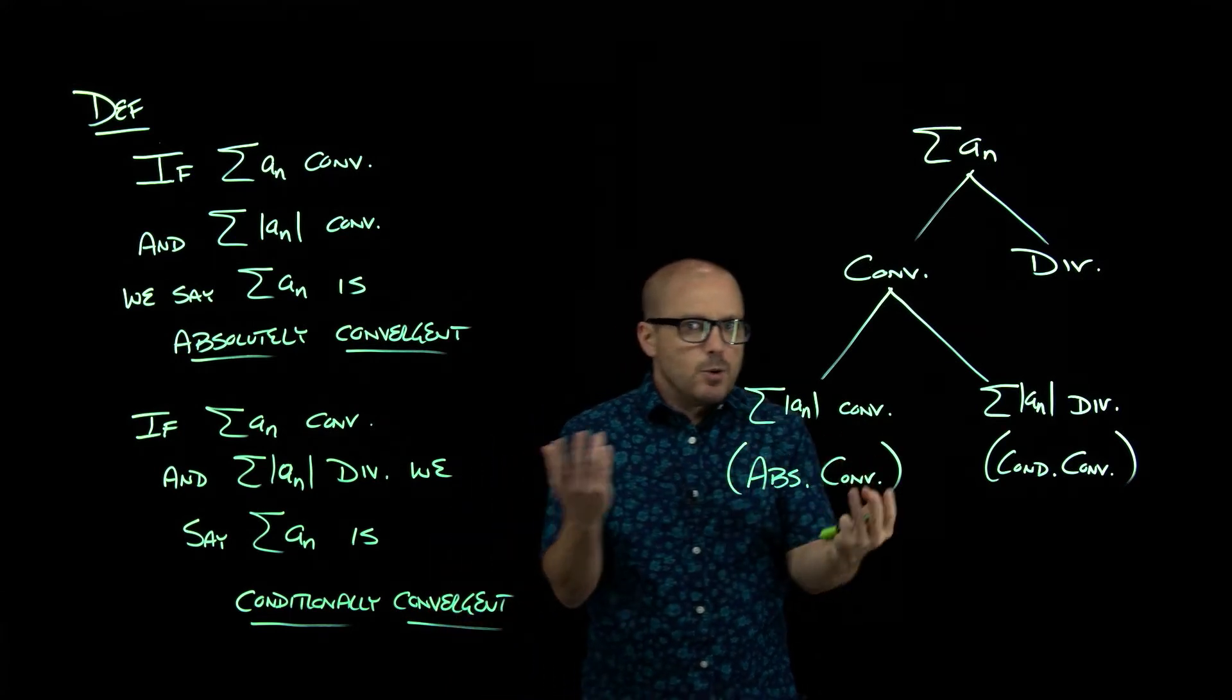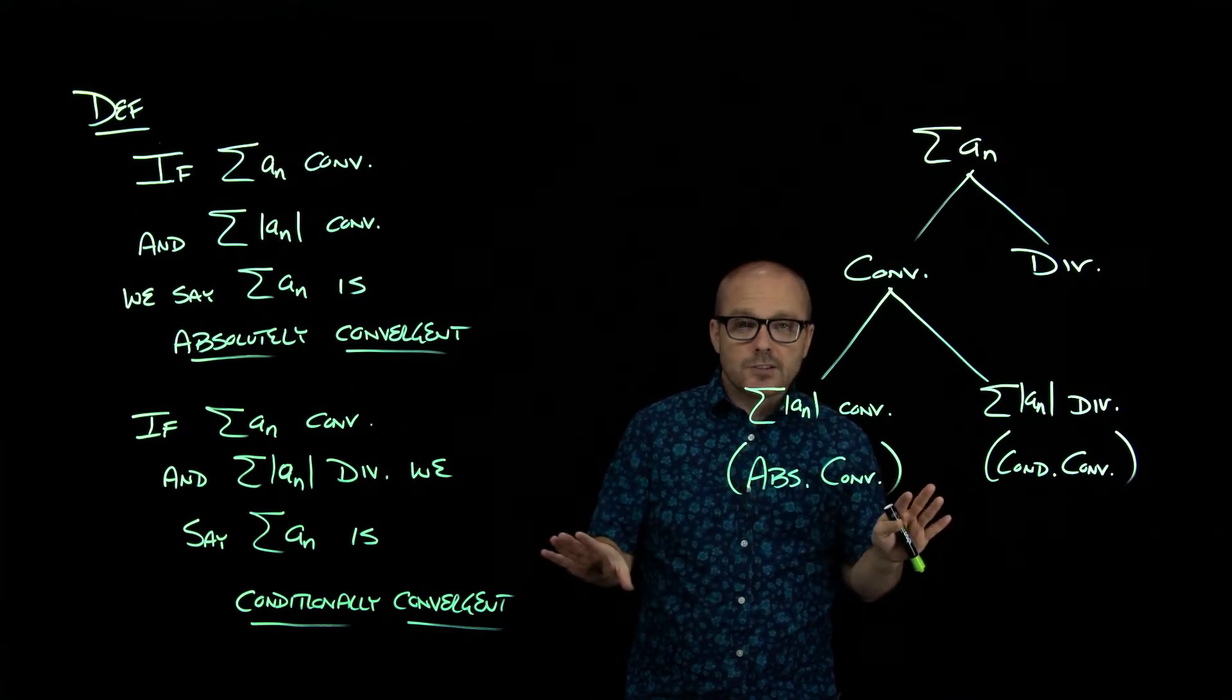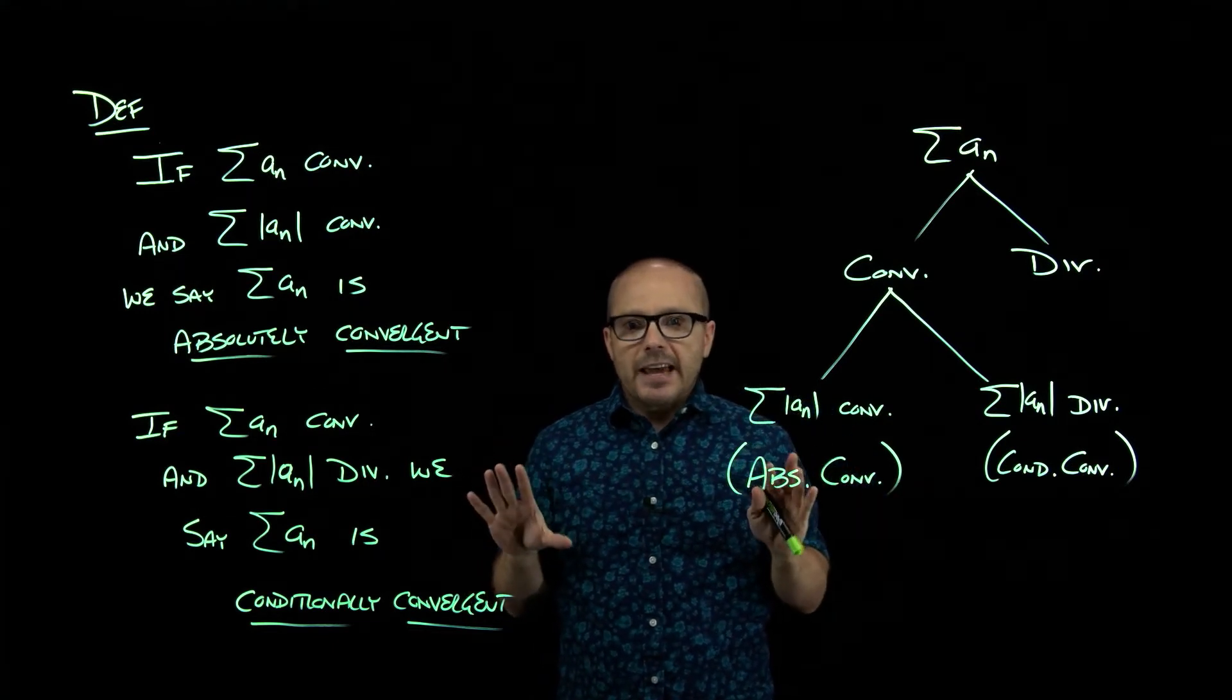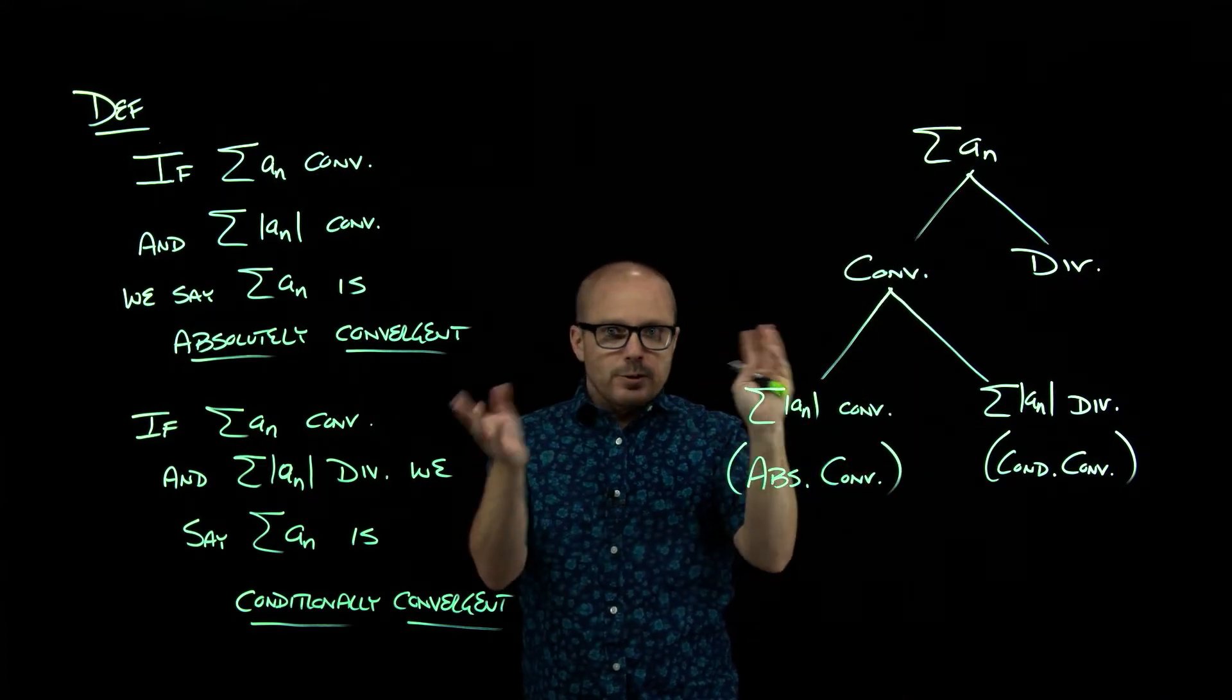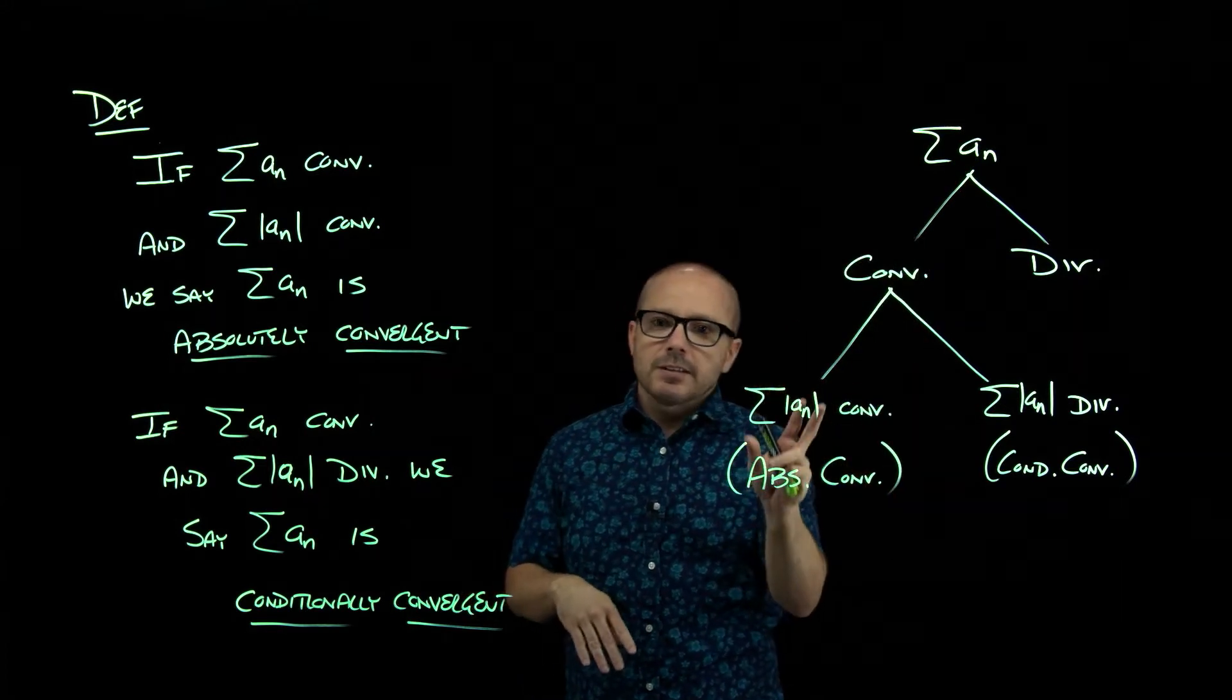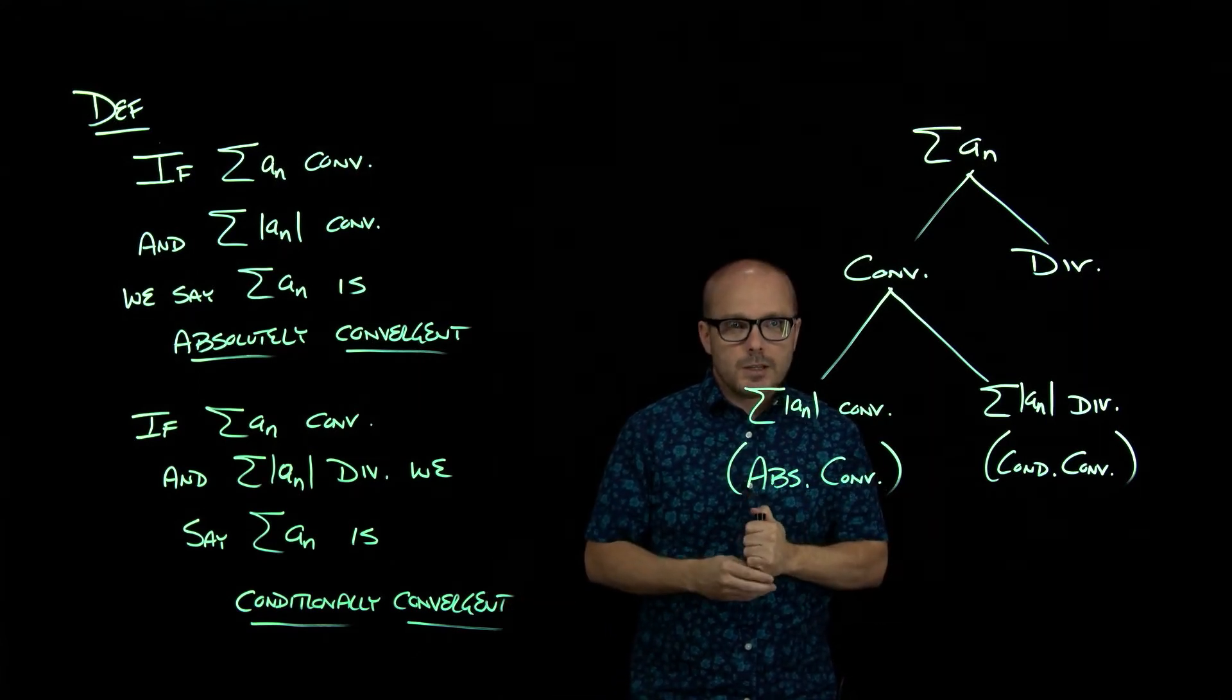If you rearrange the terms, it'll always add up to the same thing. So if this adds up to five and you go through and just start shuffling all those numbers around, it still adds up to five, just like for finite sums, what you've been used to your whole life.